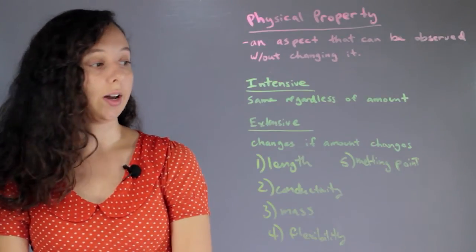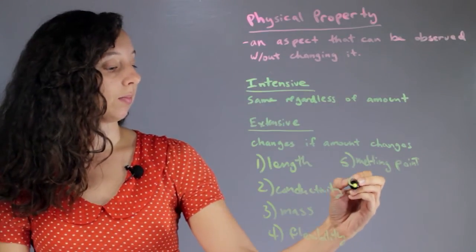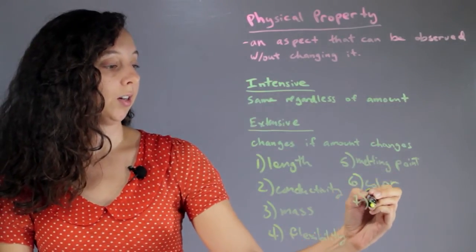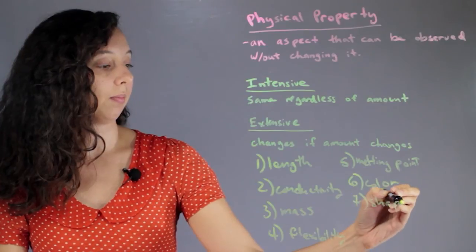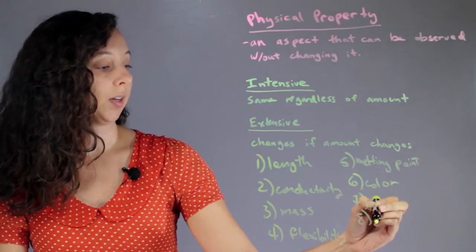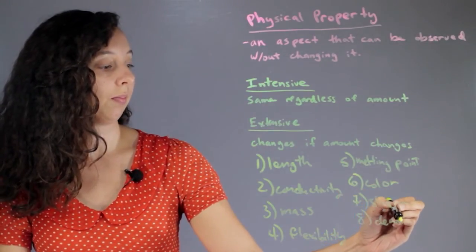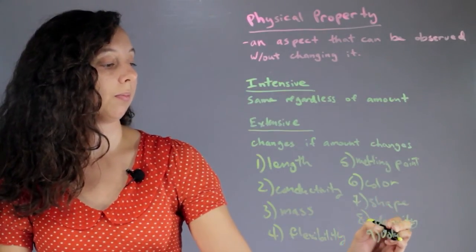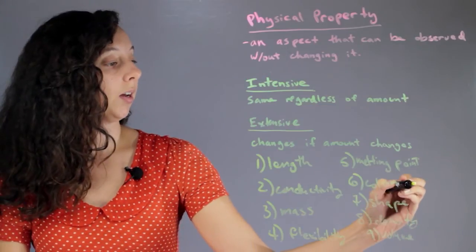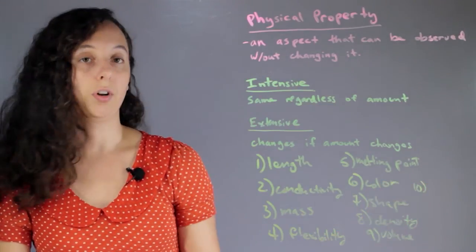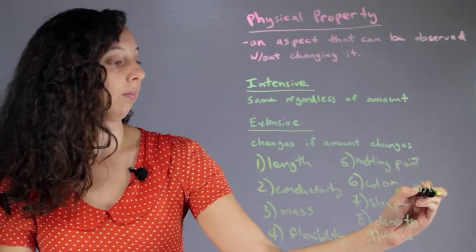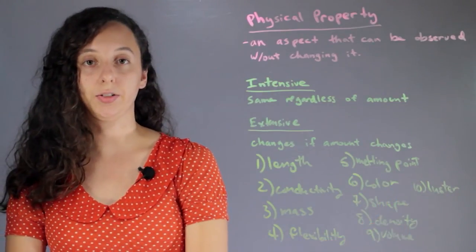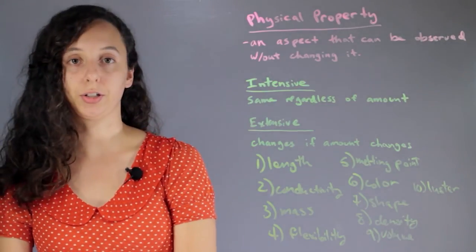It hasn't changed chemically. Color. Shape. Density. Volume. And for number ten, one of the weirdest ones: luster — which is just how shiny something is. I just think luster is a weird word.